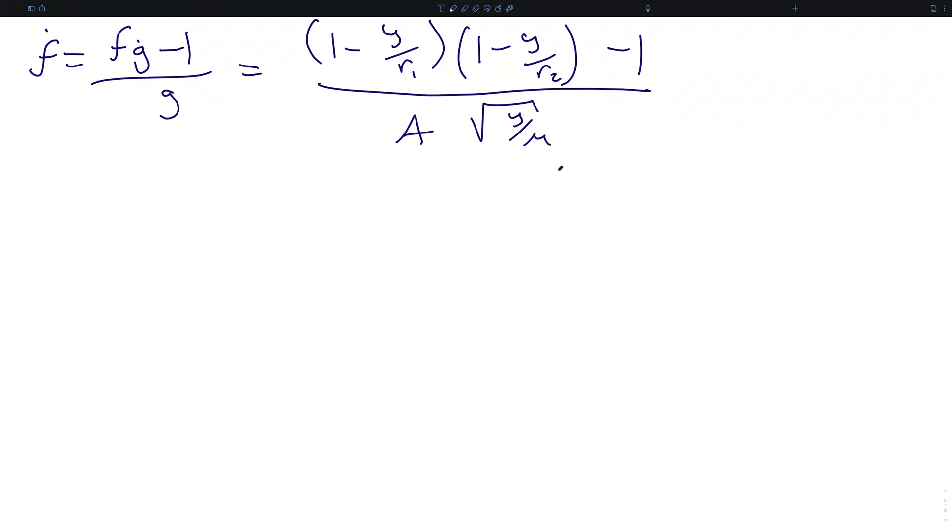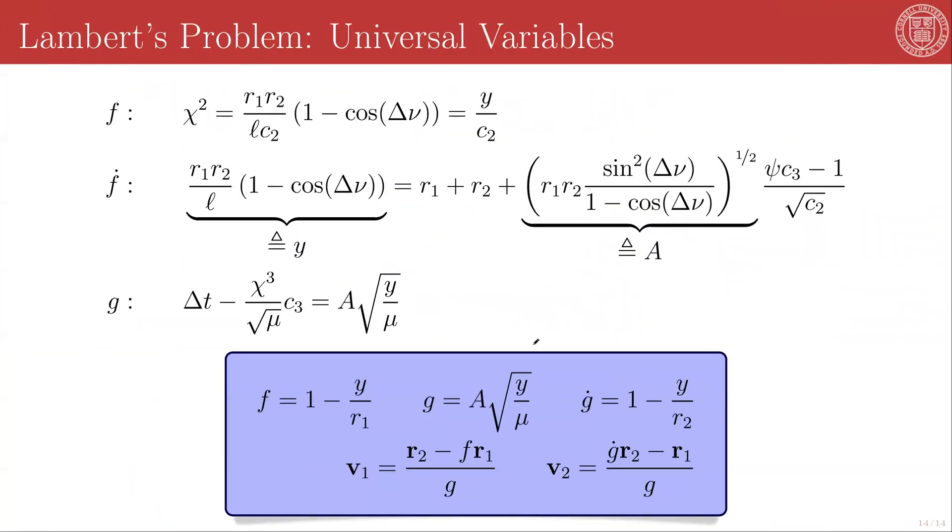This can further be rewritten as... So f dot is equal to the square root of the product mu y over A times the quantity y minus r1 minus r2. So now we have the ability to write all four of our f and g functions f, g, f dot, and g dot in terms of r1, r2, and delta nu.